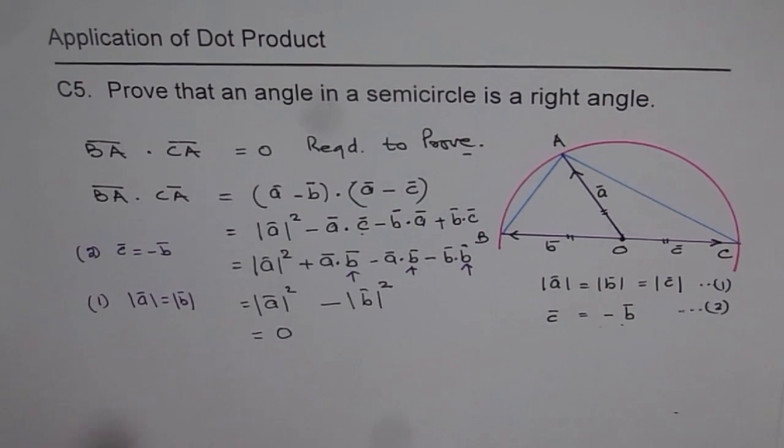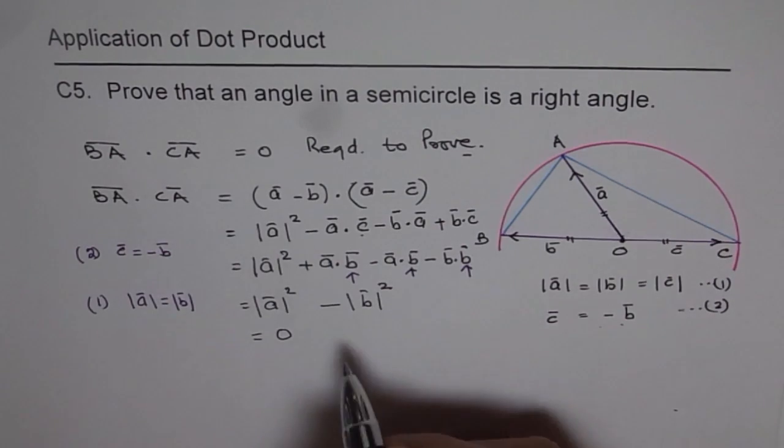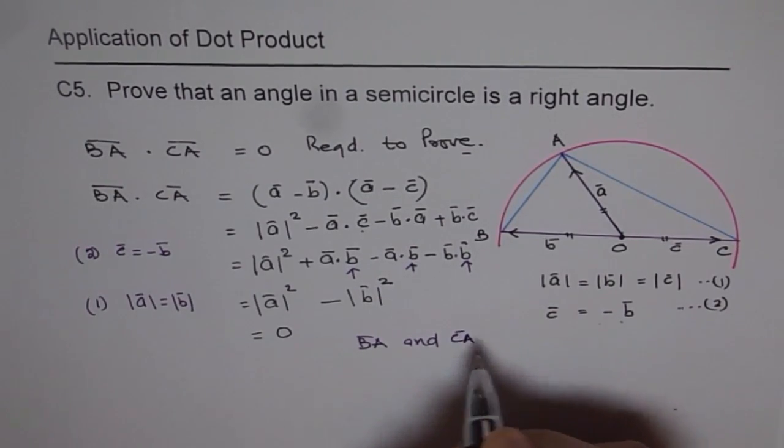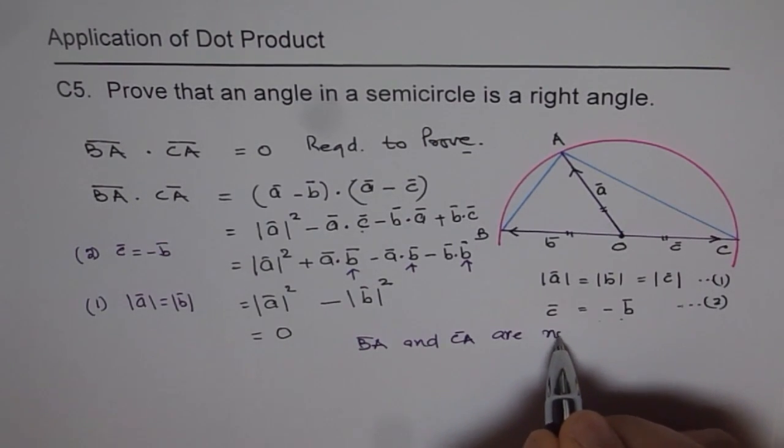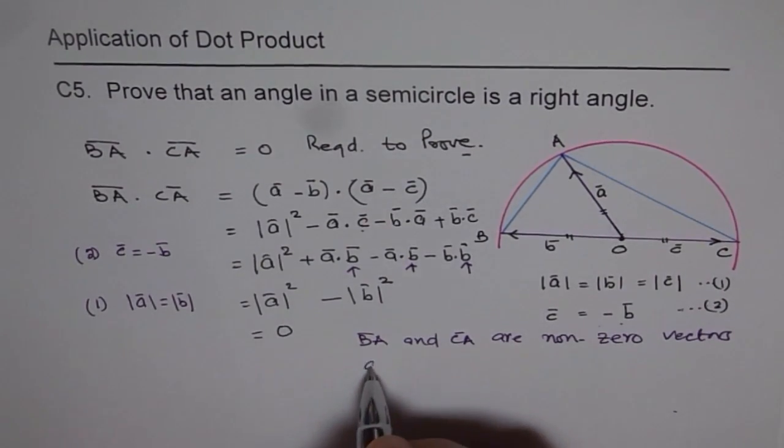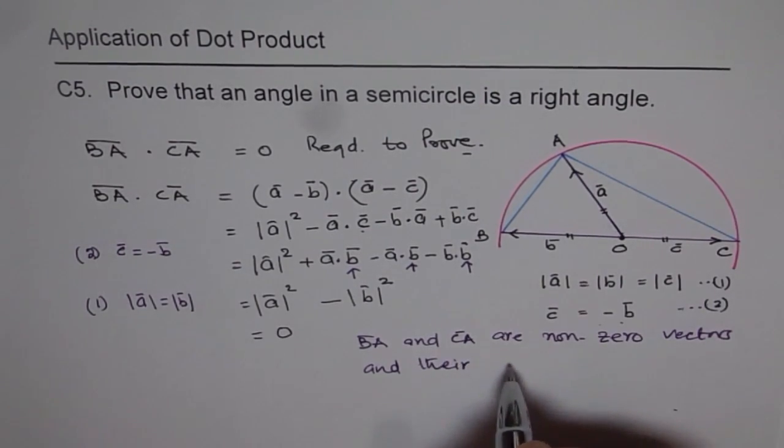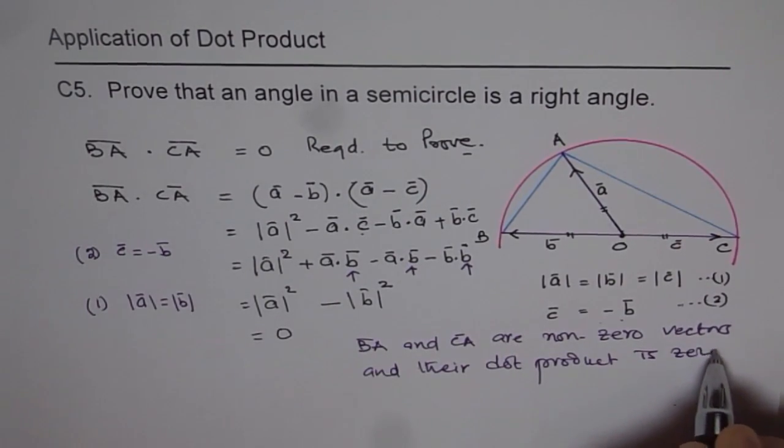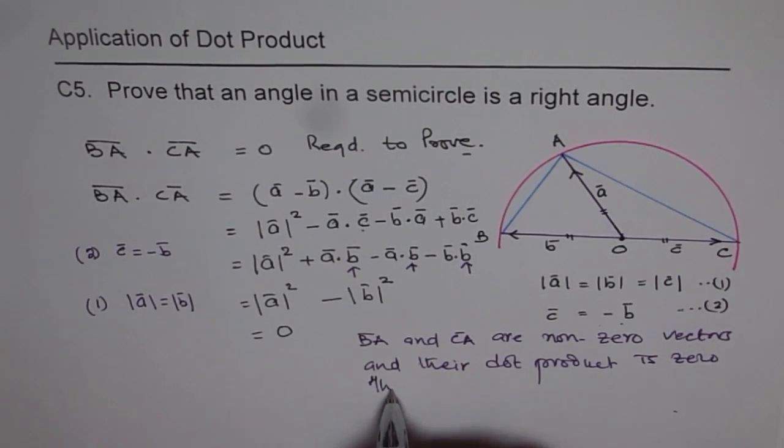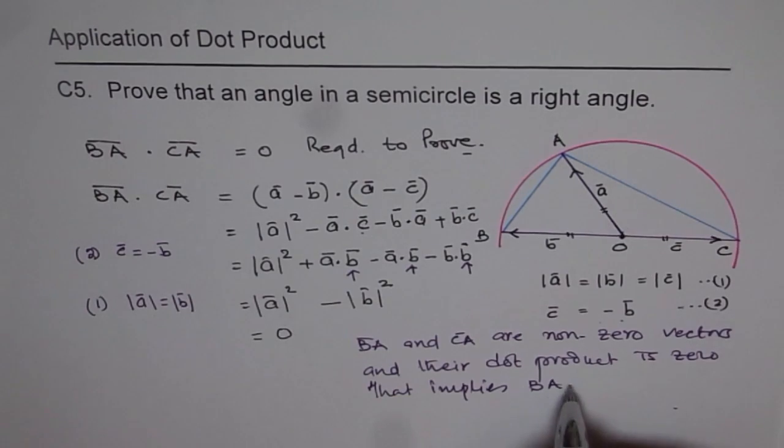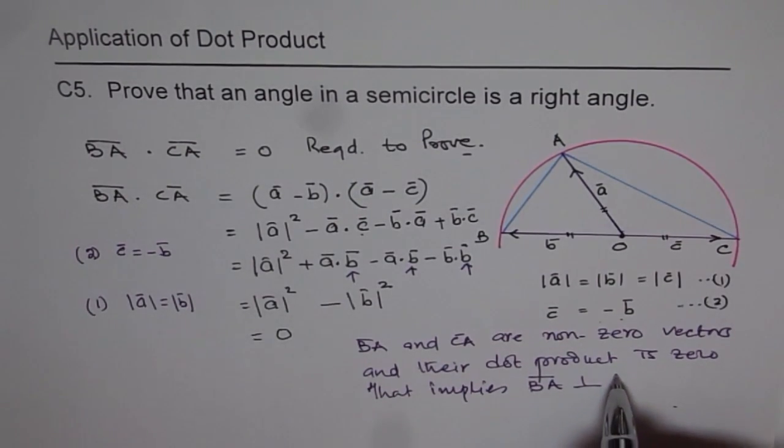And we know if the dot products are zero for two non-zero vectors. So now we can conclude since BA and vector CA are non-zero vectors, and their dot product is zero, that implies that BA is perpendicular to CA.